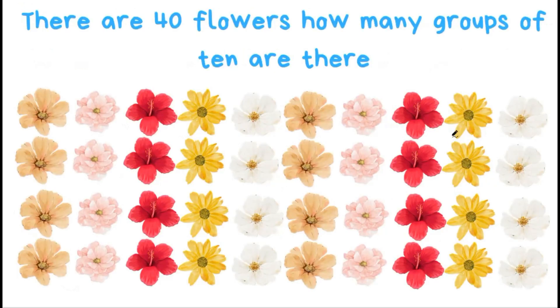There are 40 flowers. How many groups of 10 are there? Let's count. 1, 2, 3, 4, 5, 6, 7, 8, 9, 10.